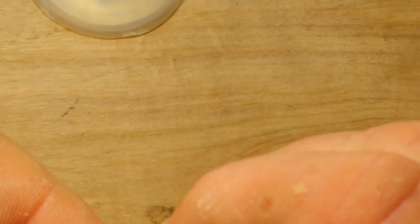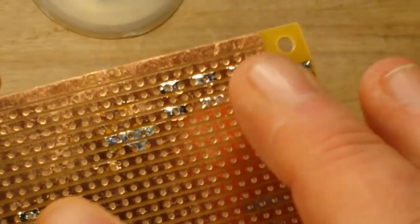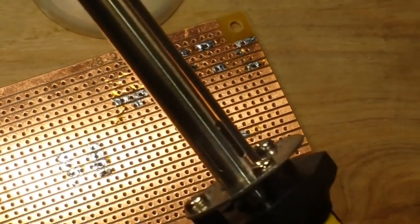So it didn't do a great job, but it did better than the wick would have done. And that's, like I said, just another technique available for desoldering. This is the manual desoldering pump.